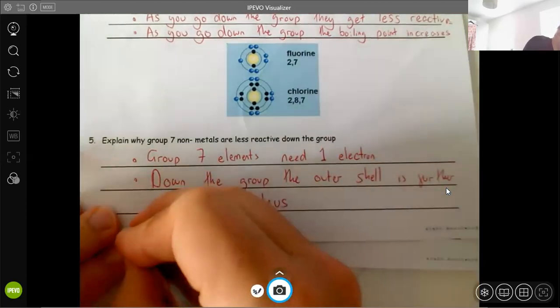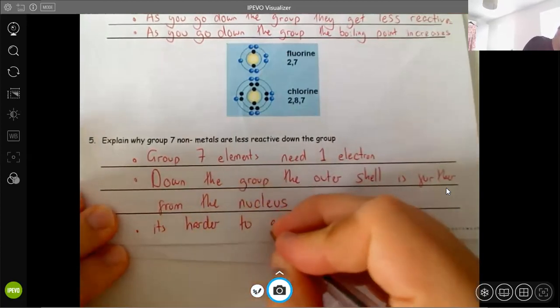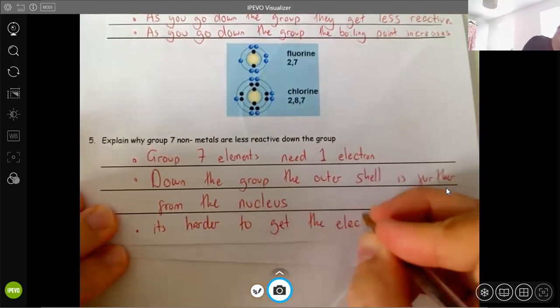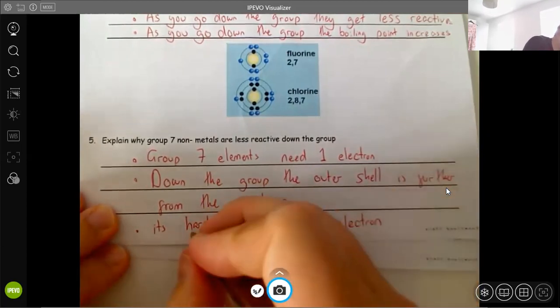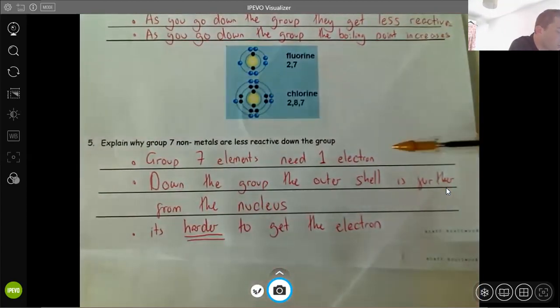Therefore, because it's further from the nucleus, it's harder to get the electron. And that is the key bit there. So I'll go through it again. Group 7 elements need one electron. Down the group, that outside shell is further from the nucleus. This means it's harder to get the electron. Therefore it's less reactive. We find it harder to react.